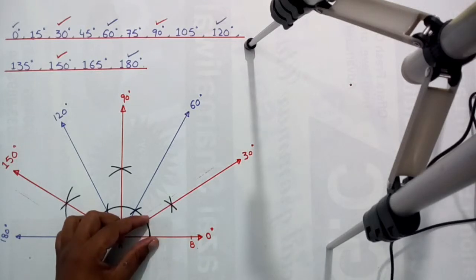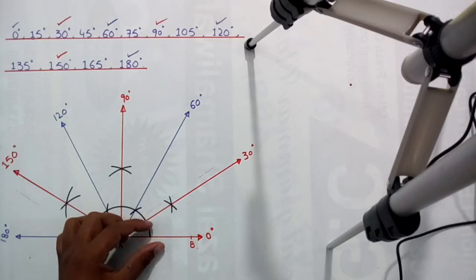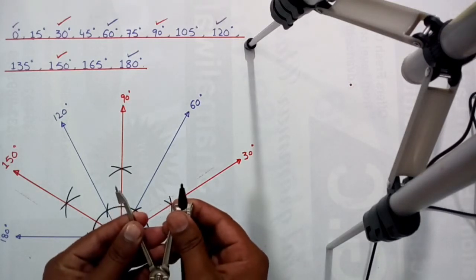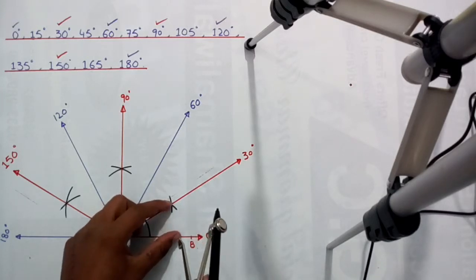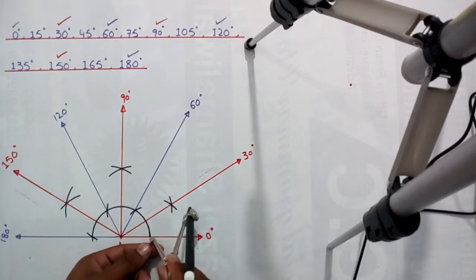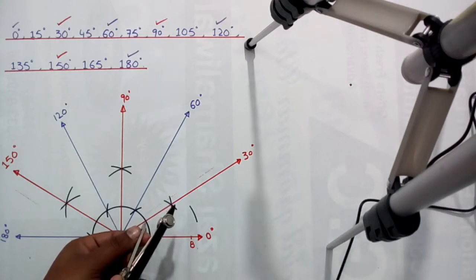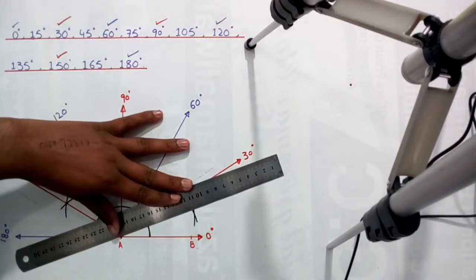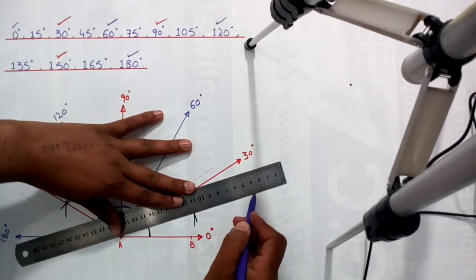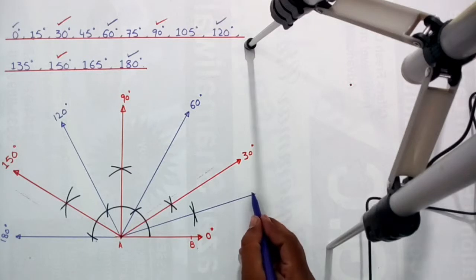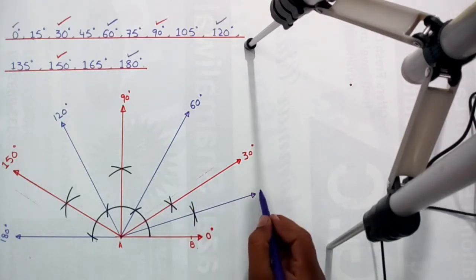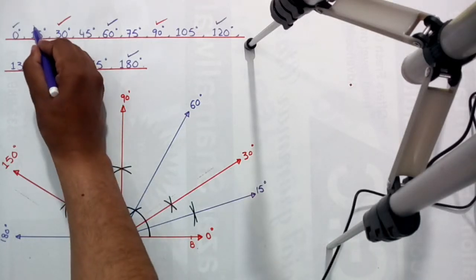Now divide this 30 degree angle into two equal parts to find 15 degrees. Open your compass to a suitable length, put the needle on this point and draw an arc, then put the needle on the next point and draw a second arc which cuts the first. Join point A with this point — this angle equals 15 degrees, so 15 degrees is also covered.